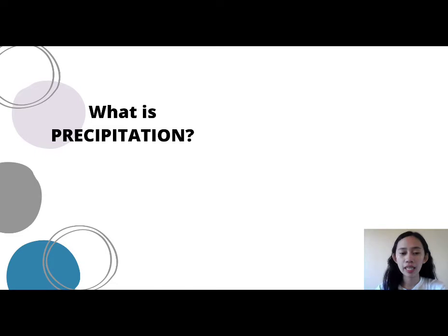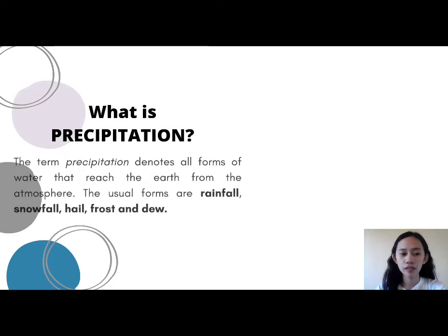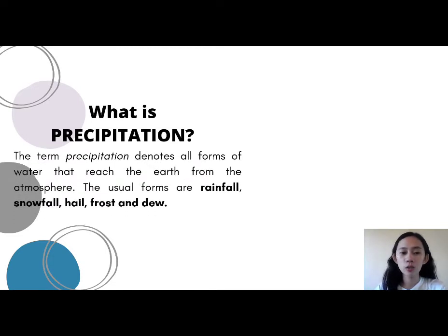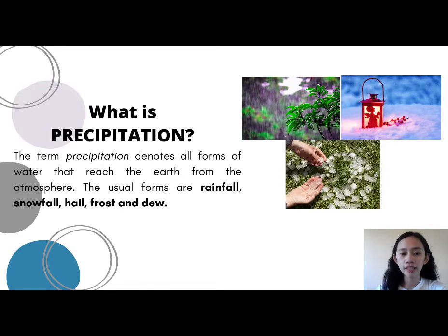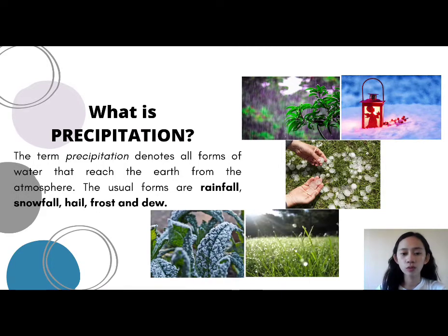So what is precipitation? The term precipitation denotes all forms of water that reach the earth from the atmosphere. The usual forms are rainfall, snowfall, hail, frost, and dew. It is also the final process of the hydrologic cycle through which the water from the atmosphere falls down on the earth.